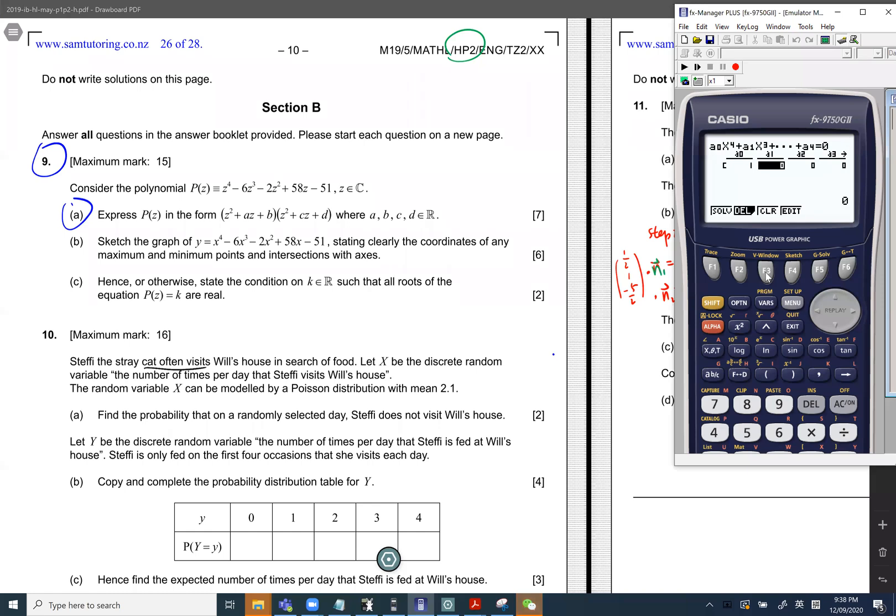So we just input the numbers: 1, negative 6, negative 2, 58, negative 51.